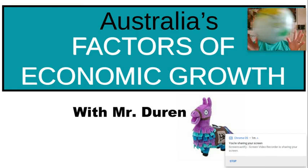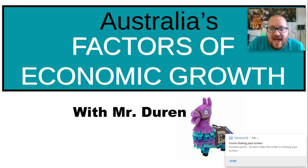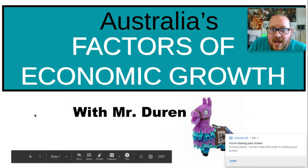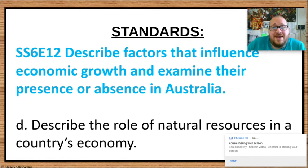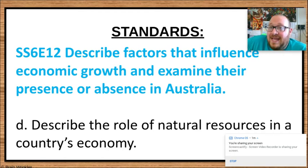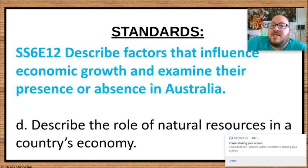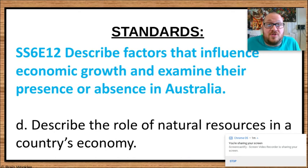We're going to talk about their natural resources — what they have. This is a loot llama. Say hello to the loot llama. The loot llama is from Fortnite and it's going to hook you up with stuff. We like getting stuff. Let's talk about what stuff they have in Australia. Our standard today: we have to describe factors that influence economic growth and look at their presence or absence in Australia.